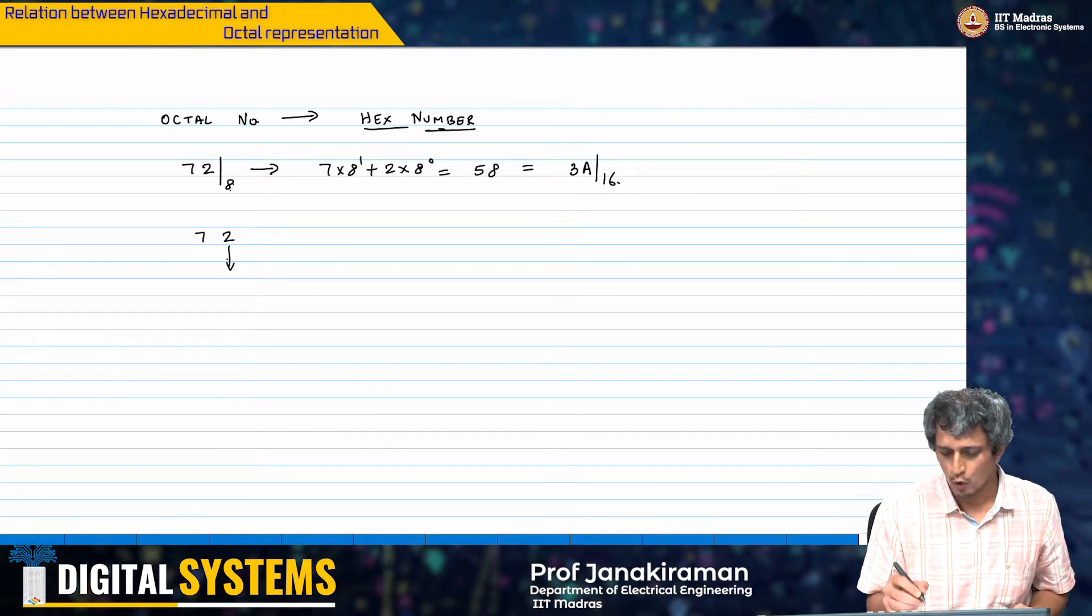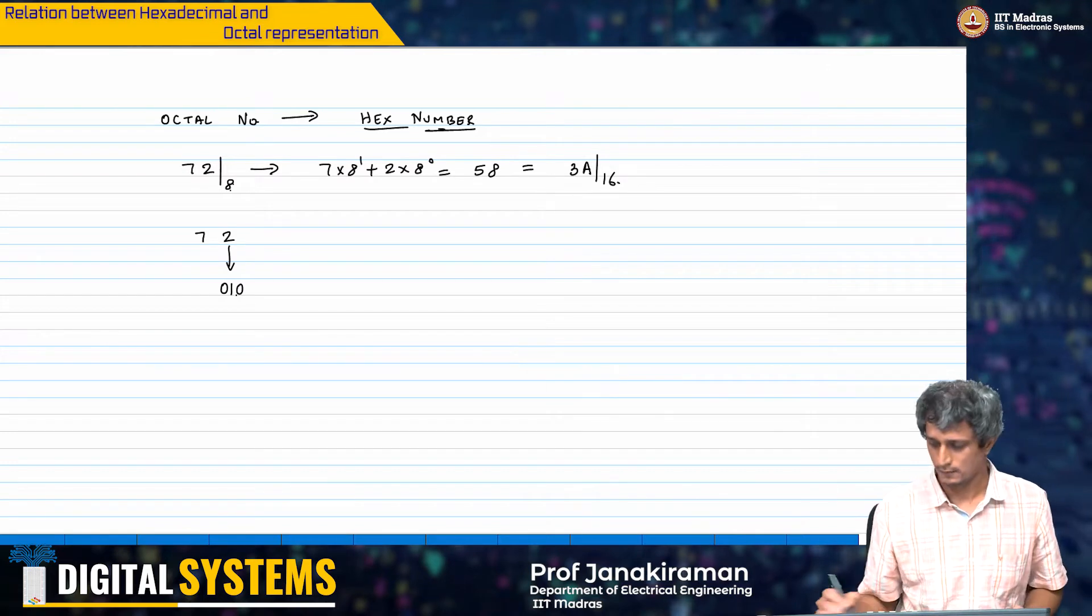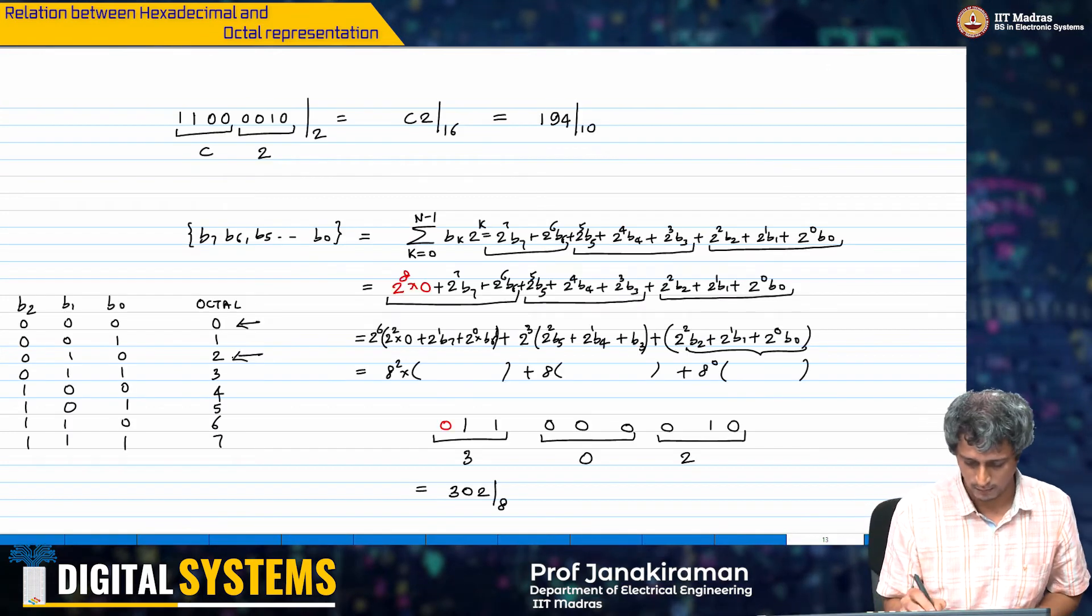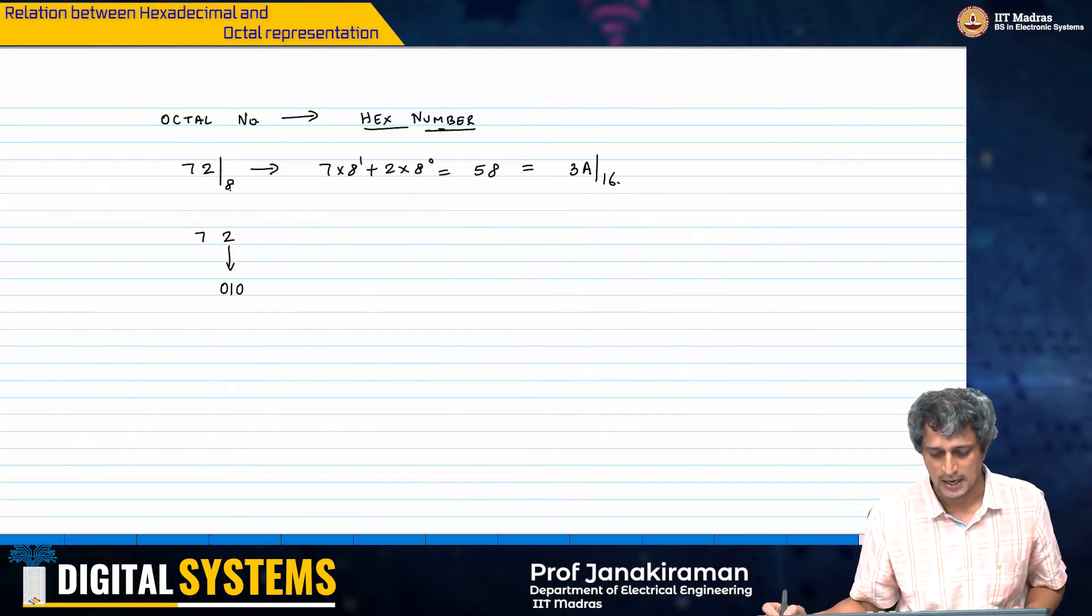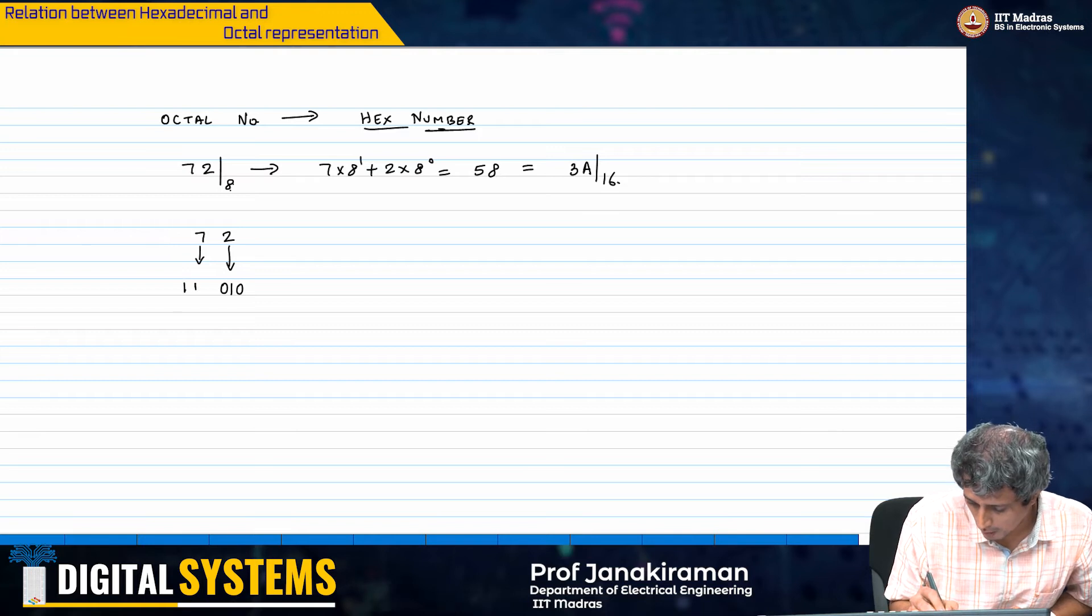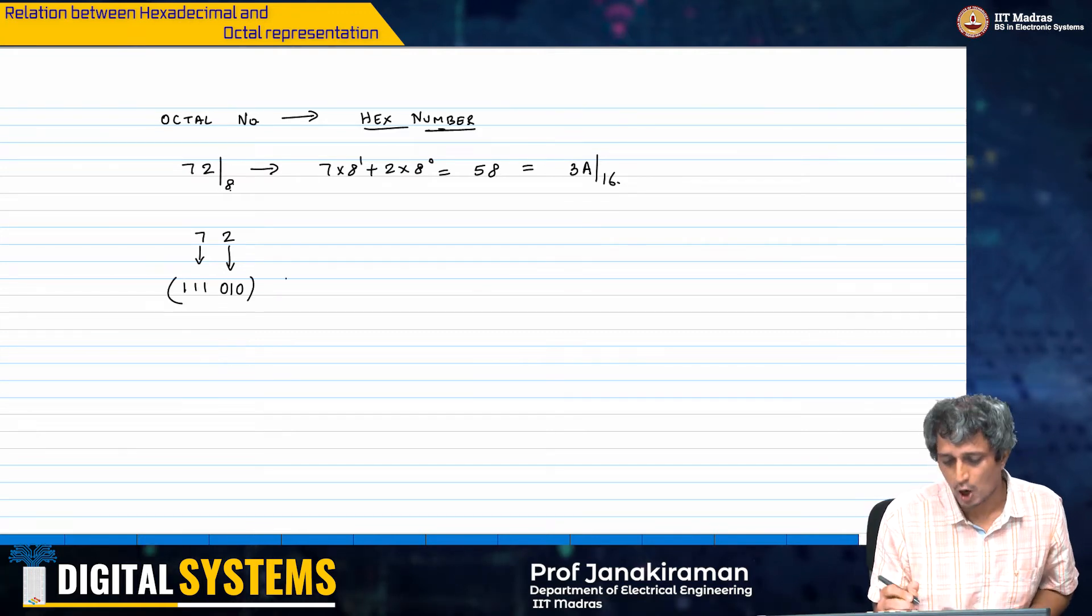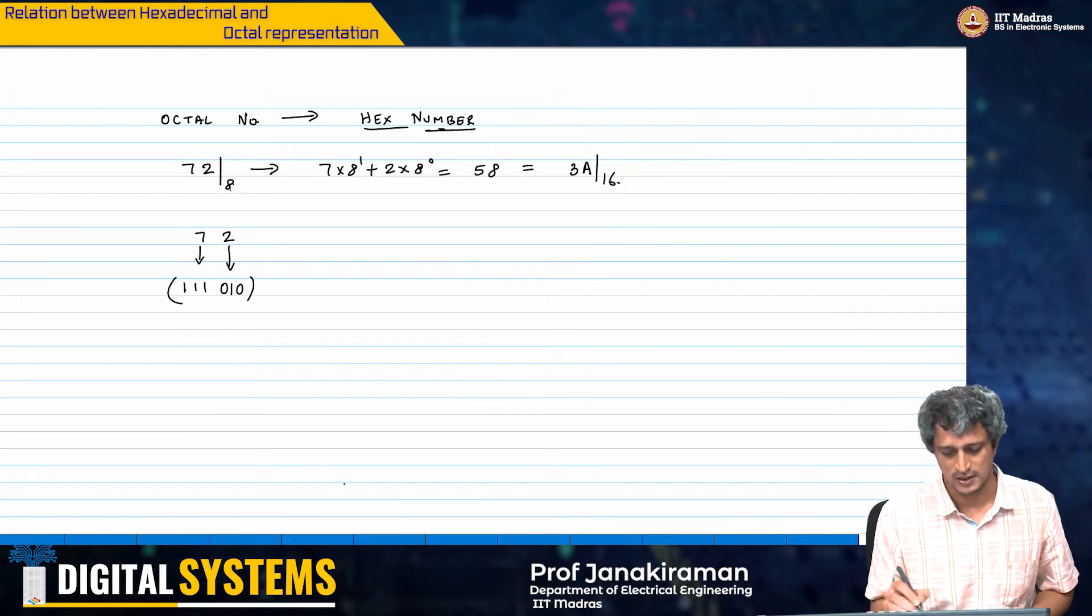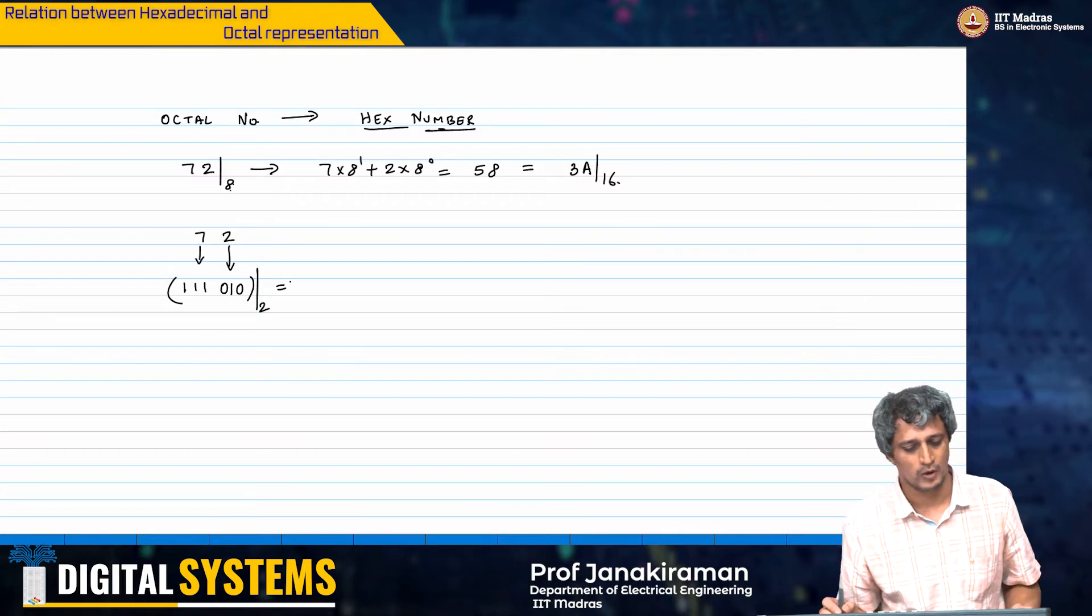What you do is, you take 2 which is nothing but in 3-bit binary 010. Why? Because it is here. This is 2, 010. And then I have 7 which is 111 in 3-bit. Therefore, the binary representation is just this, 111010.